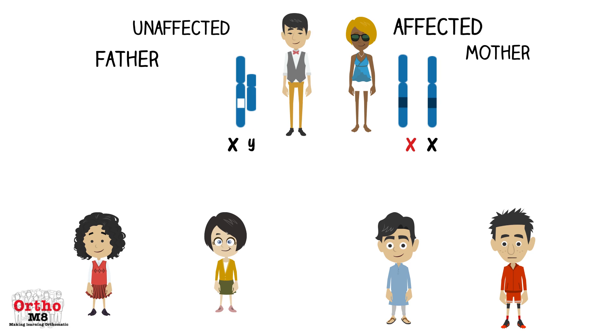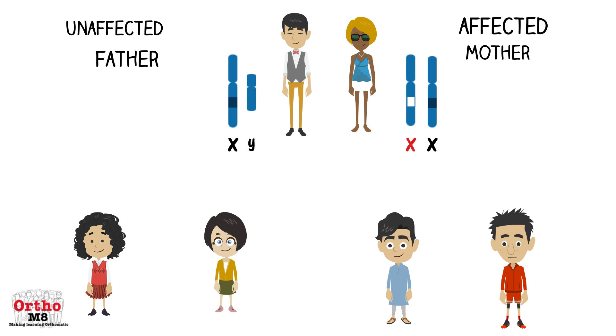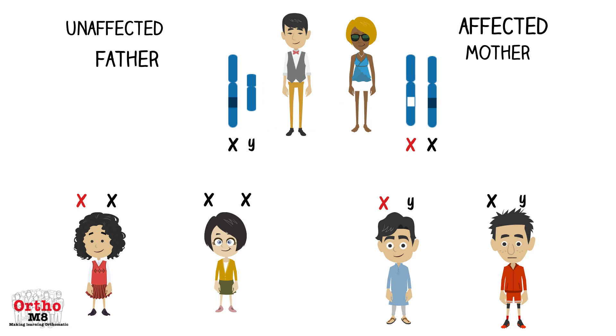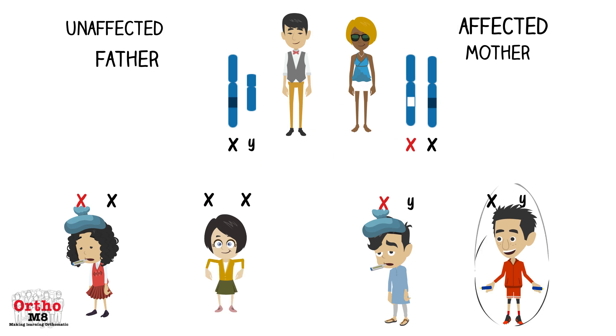However, if the father is unaffected and the mother is affected, then 50% of sons and 50% of daughters risk inheriting the mutated gene from an affected mother.